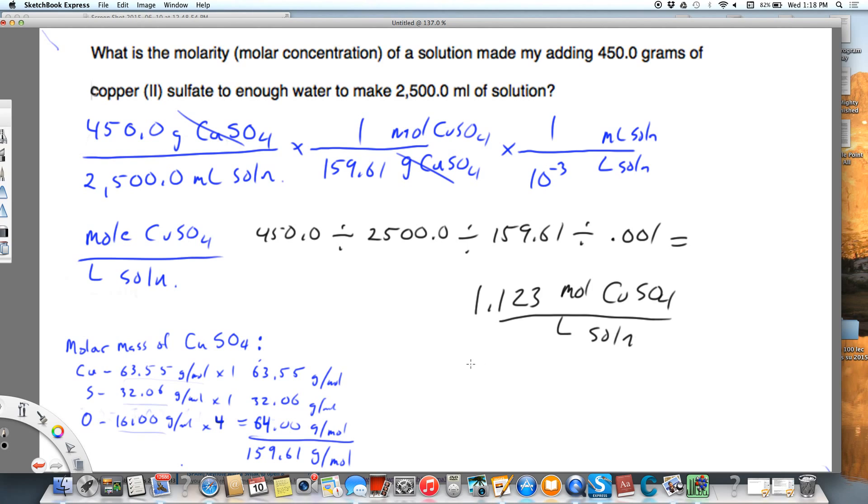You could also write that as 1.123 capital M CuSO4. These two things would mean the same thing. A third way you could write it is 1.123 molar CuSO4. The way that's wrong, we don't want to write, is 1.123 capital M over liter. That would be wrong.